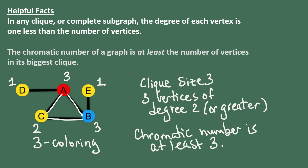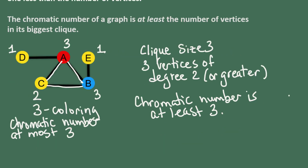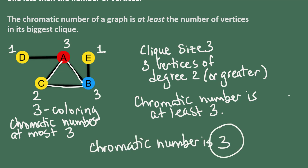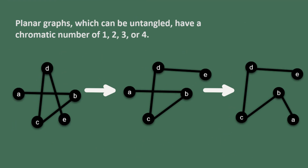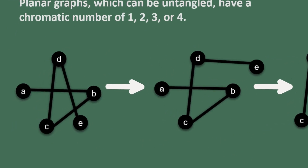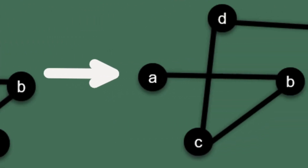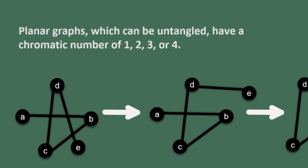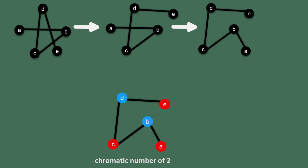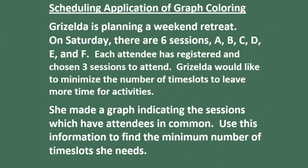This leads us to the conclusion that the chromatic number is exactly three in this case, because we have a coloring right in front of us that's a three coloring. That guarantees the chromatic number is no more than three. So if we know it's no more than three and at least three, then it must be exactly three. This is often the reasoning we use to identify the chromatic number. Another helpful fact is understanding planar graphs — graphs which can be untangled — and they can only have chromatic numbers of one, two, three, or four. This graph happens to have a chromatic number of two.